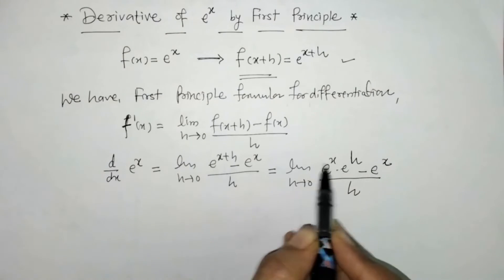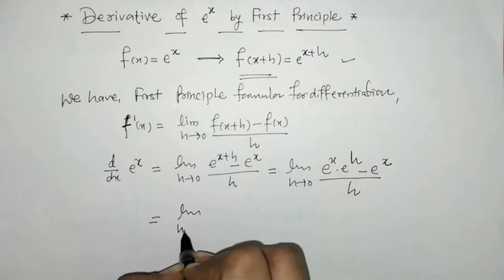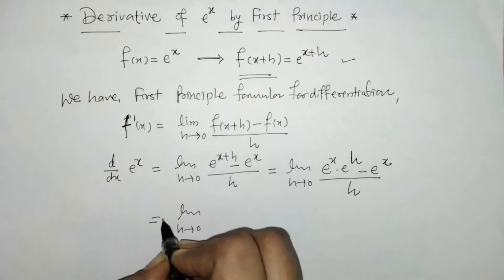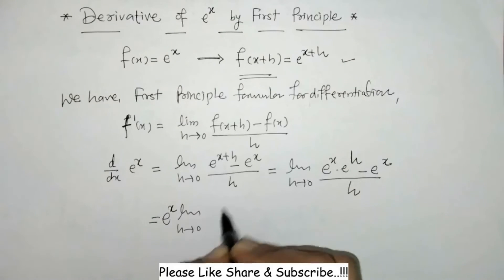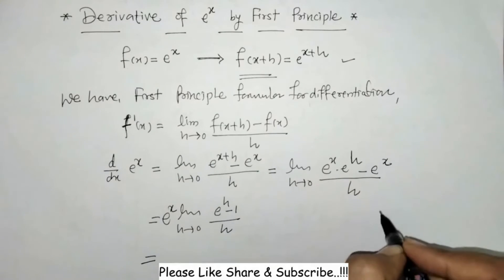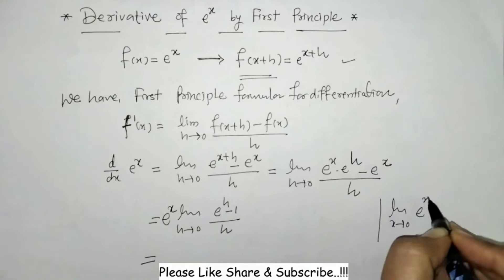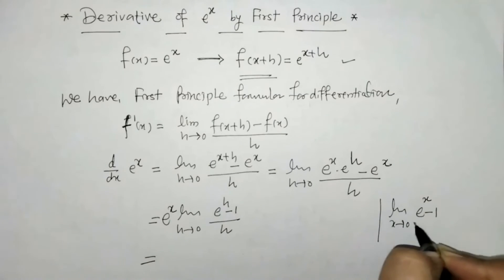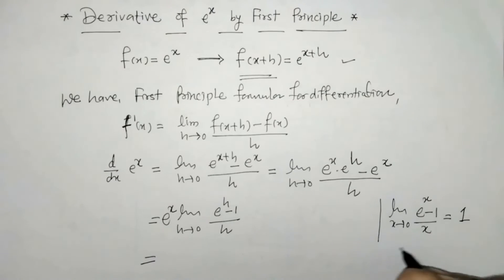We write down e raised to x as a factor here, and now we can take e raised to x outside the limit, since we have to put h = 0. So remaining inside we have the limit of (e raised to h minus 1) upon h. We can check that this matches the standard limit: limit as x tends to 0 of (eˣ minus 1) upon x, whose value is 1.